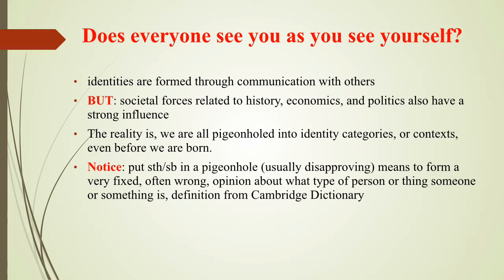In a social conversation with someone we are attracted to, our gender or sexual orientation identity is probably more important to us than our ethnic or national identities. Our communication is probably most successful when the person we are talking with confirms the identity we think is most important at the moment. Our identities are formed through communication with others, but societal forces related to history, economics, and politics also have a strong influence. Think about how and why people are identified with particular groups and not others — what choices are available to them?